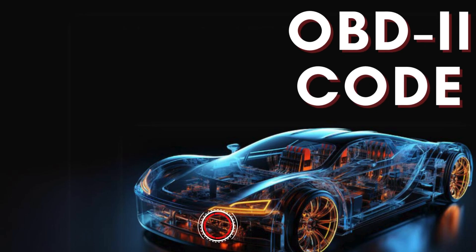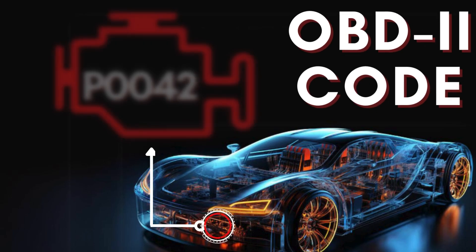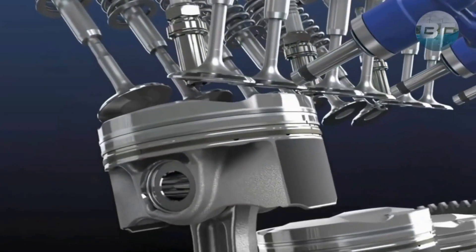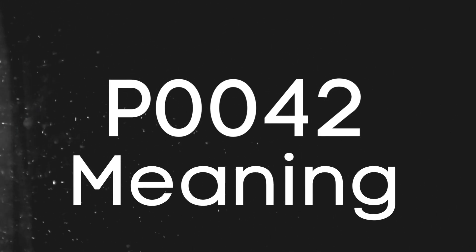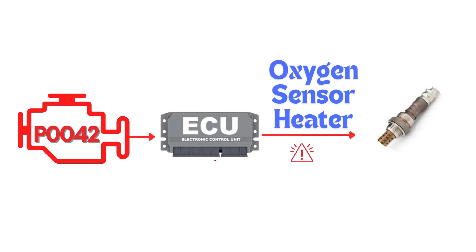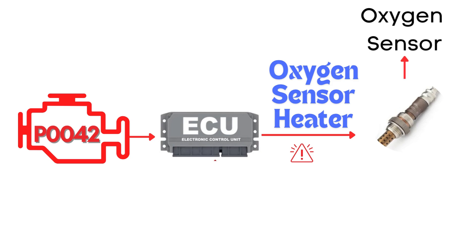Hey there! In this video, we're diving into everything you need to know about OBD2 trouble code P0042. First things first, let's break down what the P0042 code actually is. This code gets triggered when the engine control module detects a fault in the heater circuit of the oxygen sensor — specifically, the oxygen sensor heater circuit for Bank 1 sensor 3.